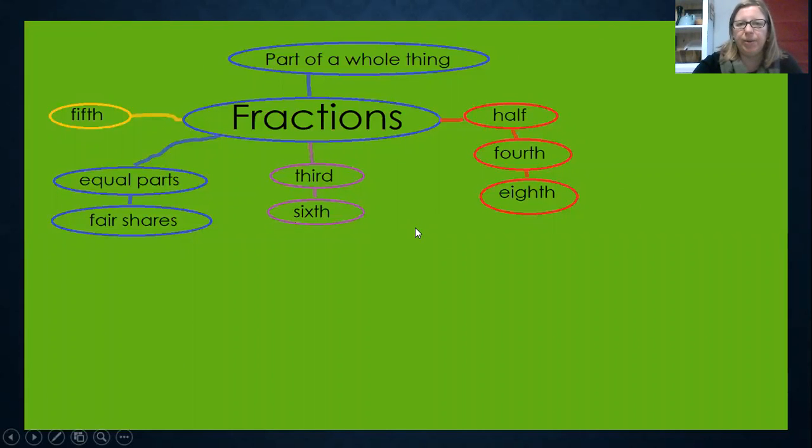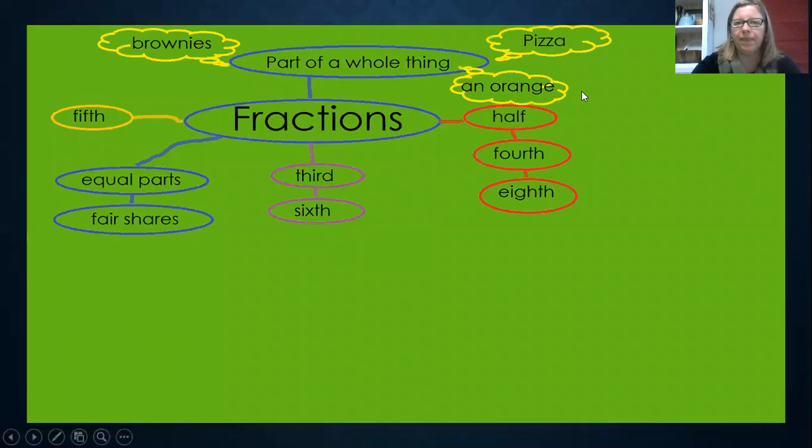When you think of a part of a whole thing, think of something, maybe you want to think about something that I usually think of that helps me to remember. I think of food that you can split into different pieces. And you will want to make them as equal in their pieces as possible. Think of a pizza, an orange, like we talked about, or brownies. We also talked about that.